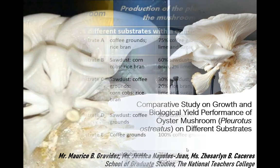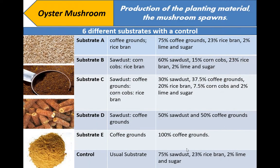In continuation, the control substrate is the usual substrate composed of 75 percent sawdust, 23 percent rice bran, and 2 percent lime and sugar. Take note that substrates A, B, C, D, E, including the control, have an additional mixture of two percent lime and sugar.